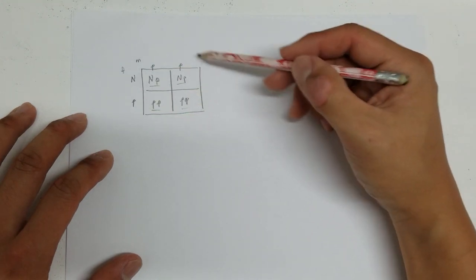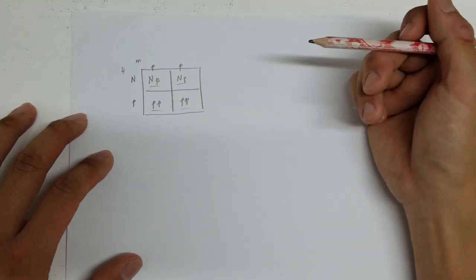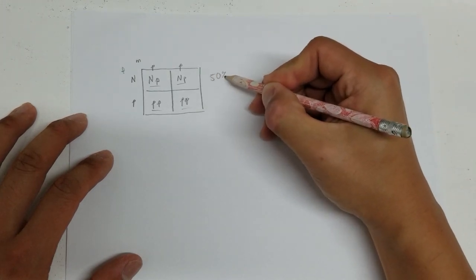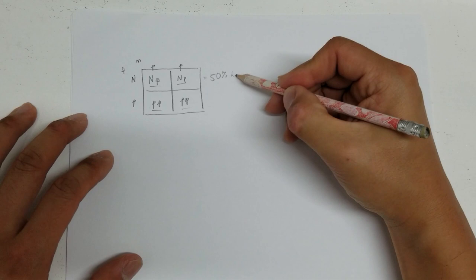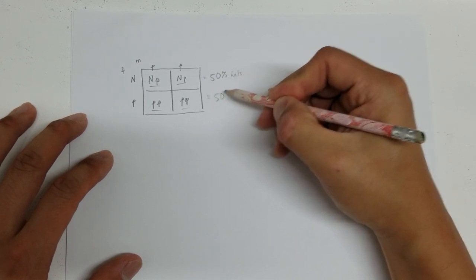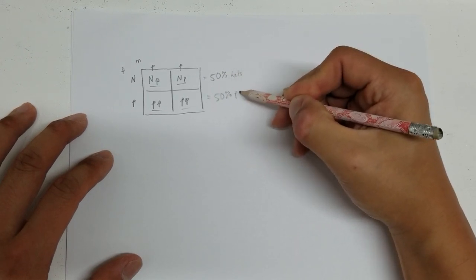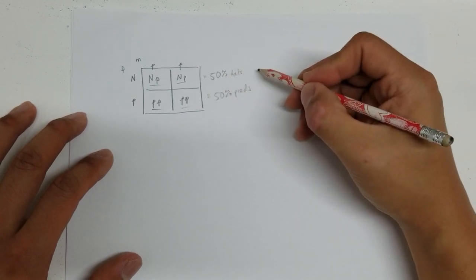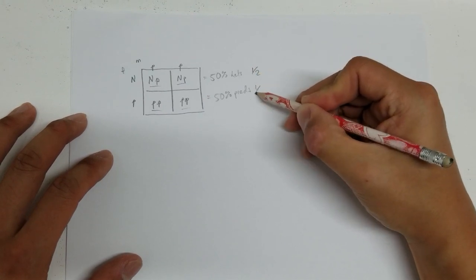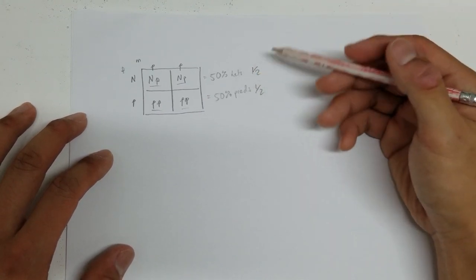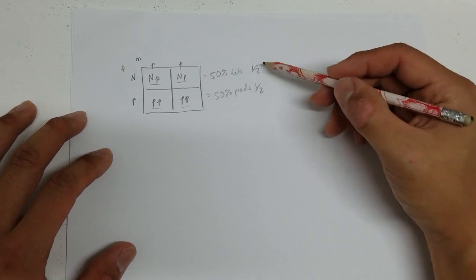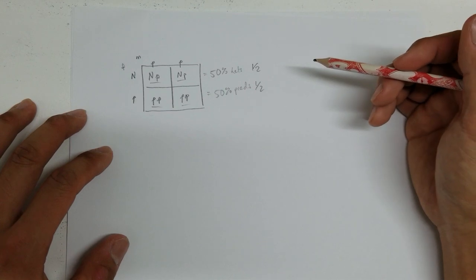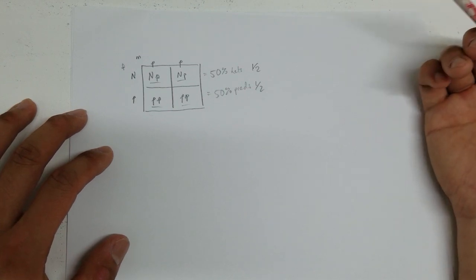So since we have four quadrants here, and two of them are hets, and two of them are visuals, we have a 50% chance of producing hets. And we have a 50% chance of producing visual pieds. So if we take the 50% and equate them into fractions, we get a half, and a half, and obviously two halves make a whole. So we know that out of this entire clutch, half of them are going to be het for pieds, and half of them are going to be visual pieds.